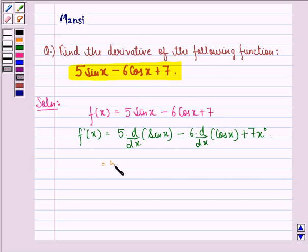So this will be equal to 5 into d by dx of sin x is cos x minus 6 into d by dx of cos x is minus sin x.